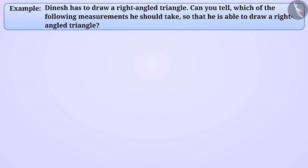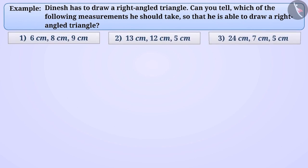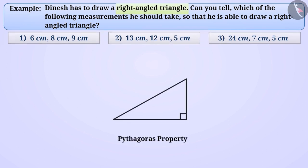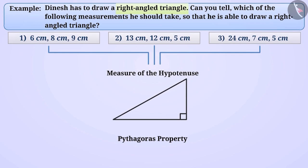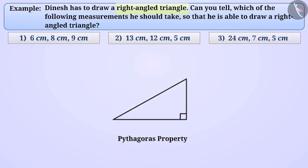Example 2: Dinesh has to draw a right-angled triangle. Which of the following measurements should he take to be able to draw a right-angled triangle? We are given three measurements in each statement. Find how many statements can create a right-angled triangle, and if so, what is the measurement of the hypotenuse? In a right-angled triangle, the measure of the hypotenuse is greater than the remaining two sides.